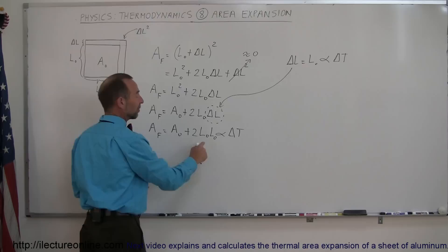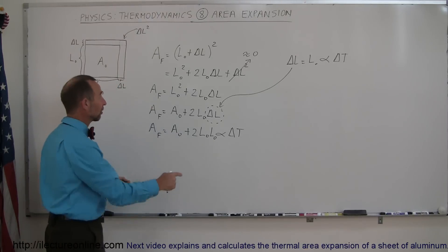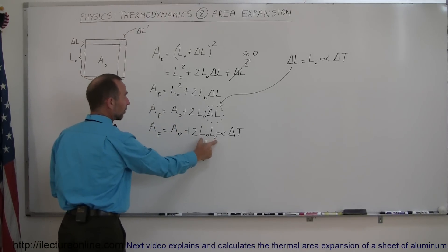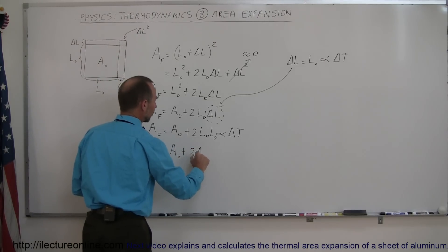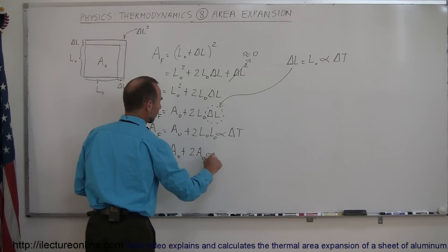and just like what we had before here, we can replace this by the original area right here, so we have A final is equal to the original area plus two times the original area times the coefficient of linear expansion times delta T.